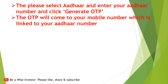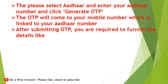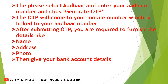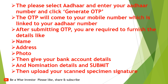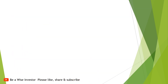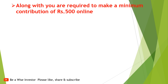The OTP will come to your mobile number which is linked to your Aadhaar number. After submitting the OTP, you are required to furnish details like name, address, and photo. Then give your bank account details and nomination details and submit. Then upload your scanned specimen signature. Along with that, you are required to make a minimum contribution of Rs. 500 online, being the first contribution.